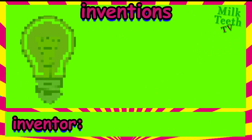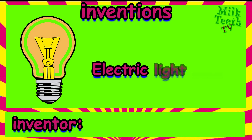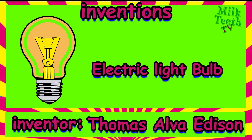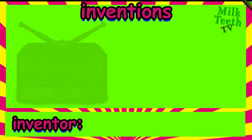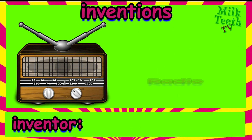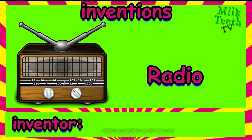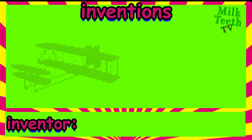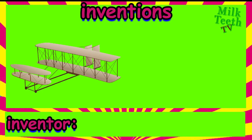This is an electric light bulb. It was invented by Thomas Alva Edison. It is one of the most important inventions in the history of mankind. This is a radio — you must have seen this at your grandma's house. It was invented by Guglielmo Marconi.